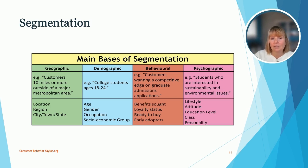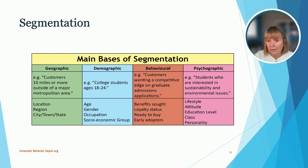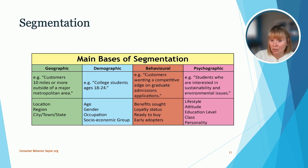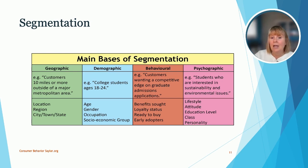And then you have psychographics: lifestyle, attitudes, class, and personality. Education level can also overlap here as a demographic. For example, students who are interested in sustainability and environmental issues represent a psychographic segment. Where you live might be a geographic factor, but it could be dependent on your education level — if your education level is higher, you might want a more expensive house in a better neighborhood, and that would be based on your psychographic.